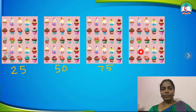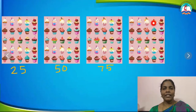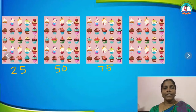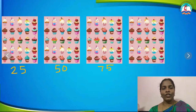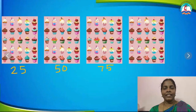Shall we add the next box? After 75: 76, 77, 78, 79, 80, 81, 82, 83, 84, 85, 86, 87, 88, 89, 90, 91, 92, 93, 94, 95, 96, 97, 98, 99, 100.